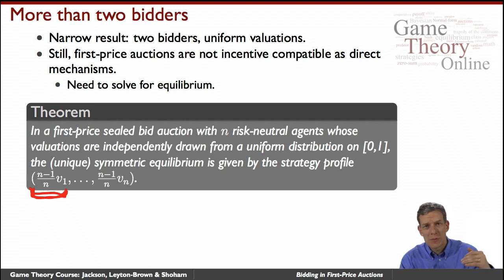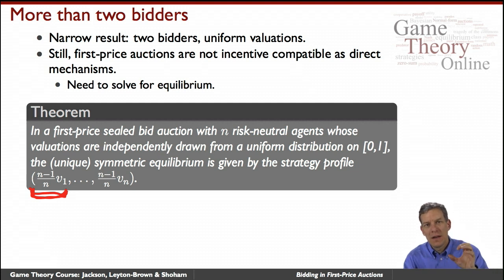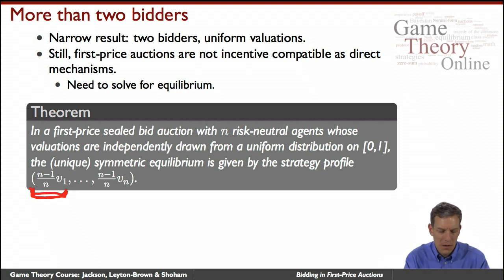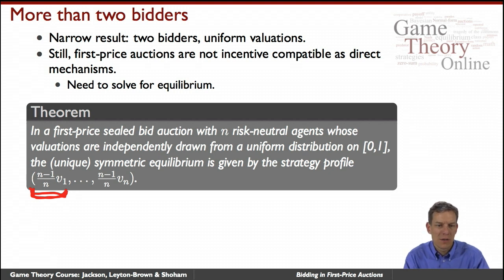With more people in the auction, it gets harder and harder to win, so you have to bid closer and closer to your value. If you lower your bid much below something close to your value, you have no chance of winning. The calculation is similar to the two-bidder case — just a different integration where you win when everybody else is below you, not just one other person.